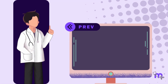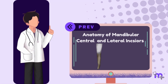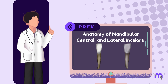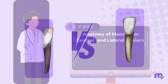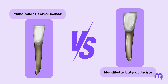In the previous videos, we have learned the anatomy of the mandibular central and lateral incisors separately. These two teeth may appear indistinguishable within the confines of the oral cavity. However, some unique features set these two teeth apart. Join us in this video as we uncover their differences.